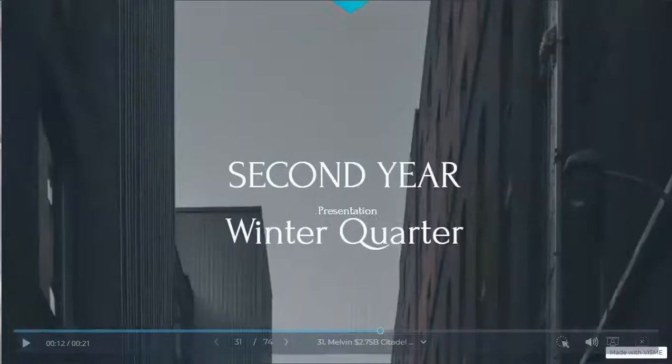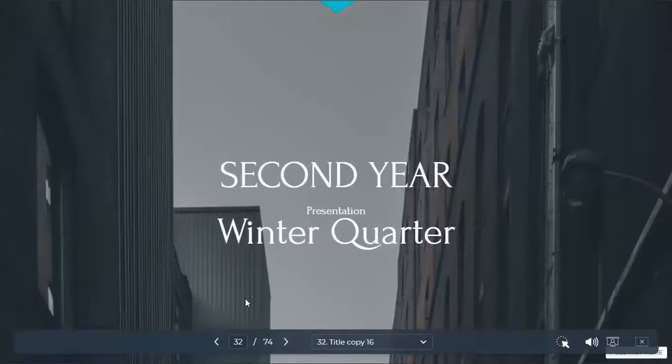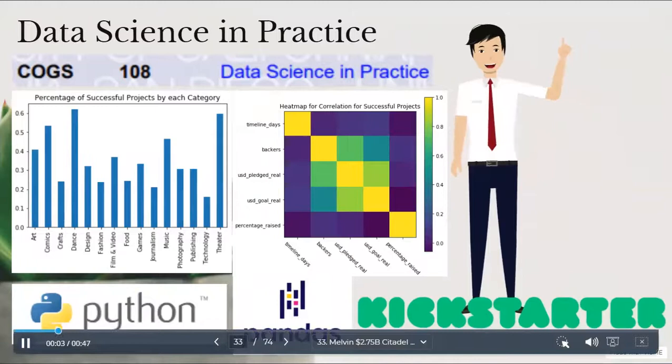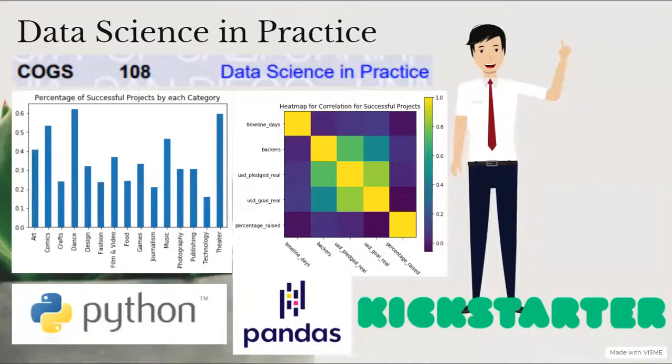So in the winter quarter, I switched to taking only data science courses. I took two classes for my major and one class as a tutor apprentice. I took data science in practice. I learned a lot about data gathering, data wrangling, data cleaning, data privacy and anonymization, data visualization, distributions, OLS, linear models, clustering, and dimensionality reduction. For my final project, I worked with a group to determine key features that make a successful Kickstarter. Part of our analysis included creating charts for various metrics such as the percentage of successful projects by each category and a heat map for correlation for successful projects. I definitely learned about the end-to-end data science process and applied that process to this project.